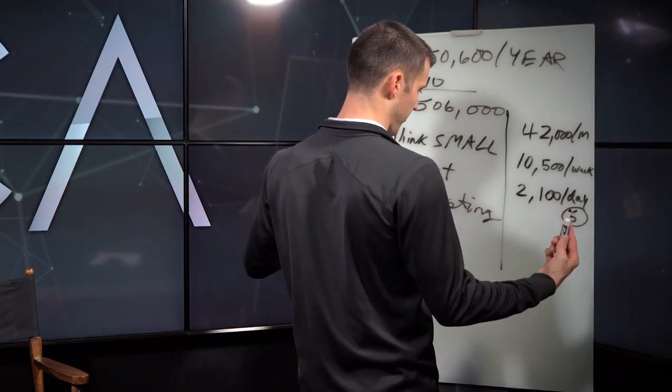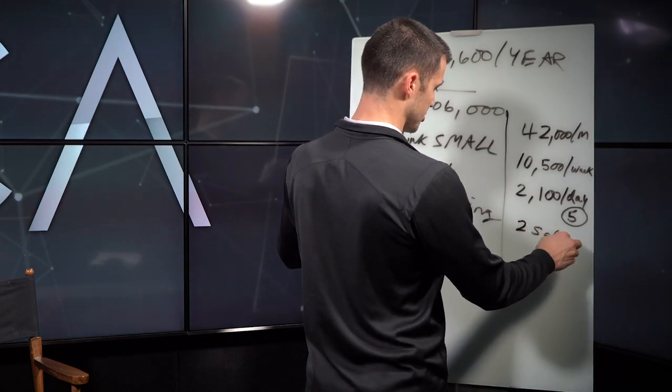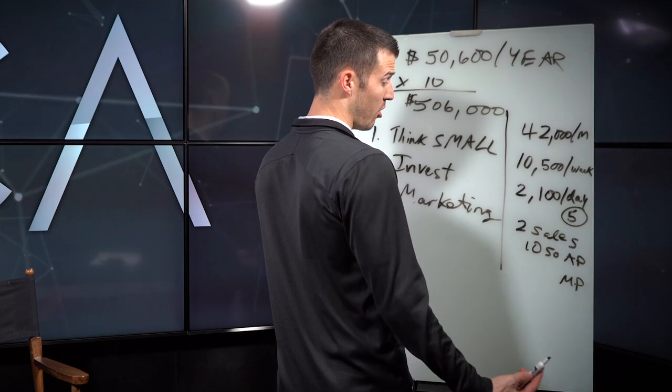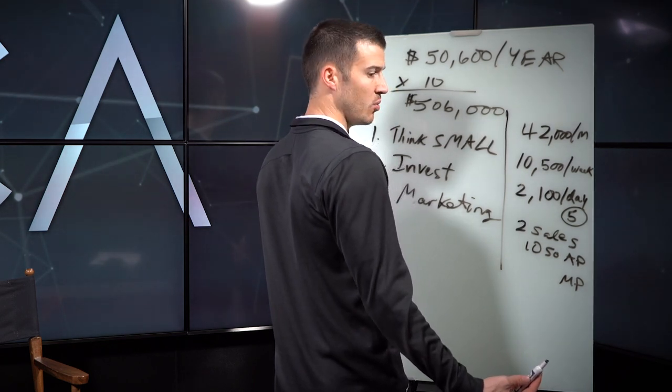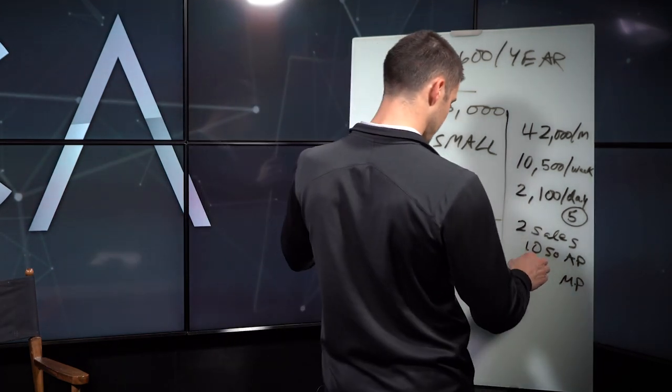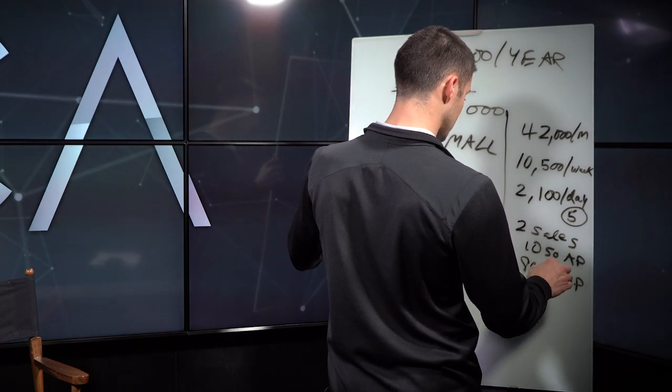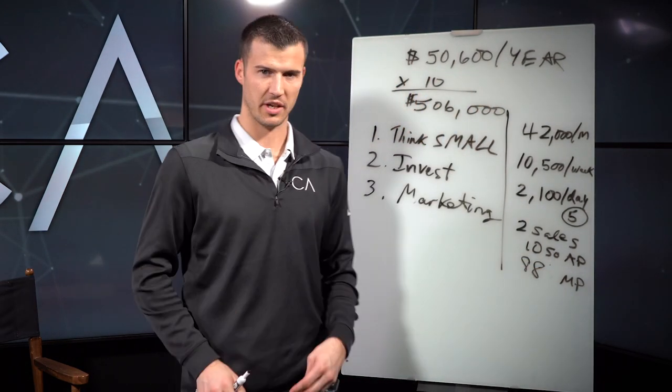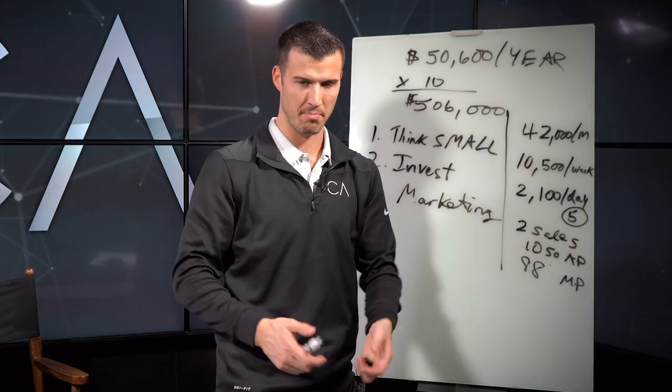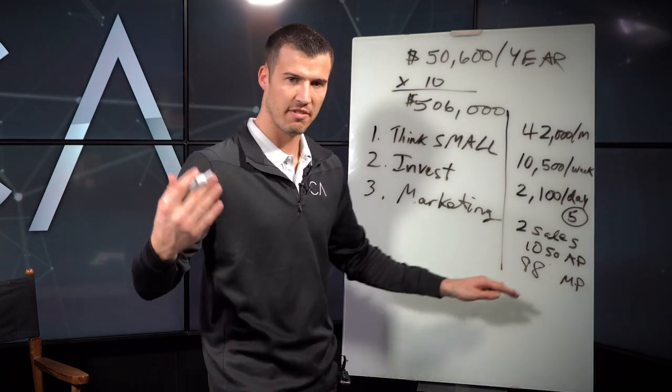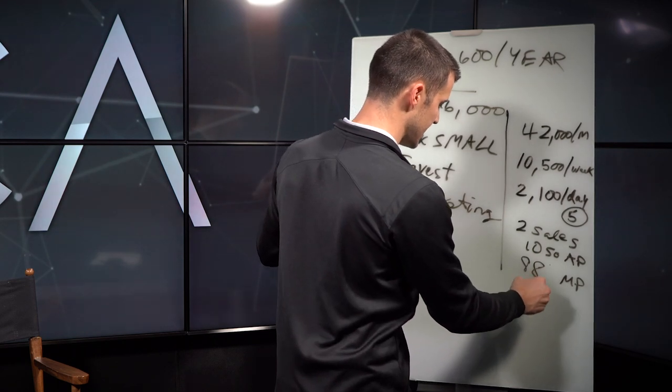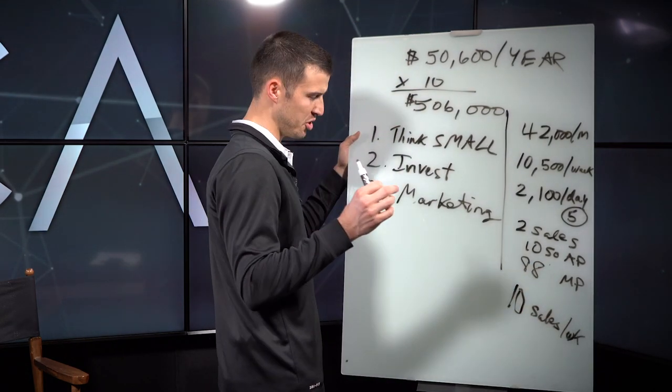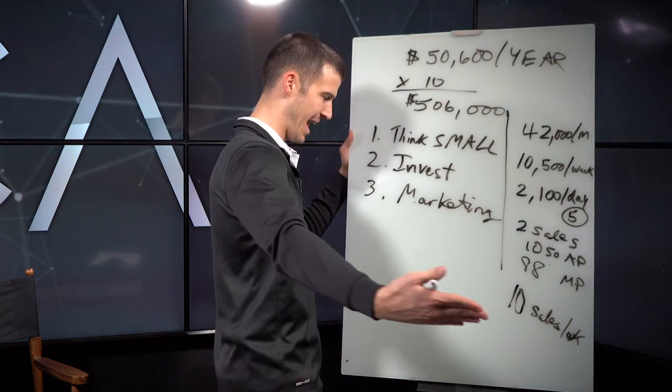If the average insurance agent would just average two sales, that means you would need $1,050 in AP. That means your monthly premium would need to be about $80 in monthly premium. That's not as difficult as you think. So if you do the math, really what you need is 10 sales per week. If you're selling smaller life insurance policies or final expense, then maybe yours is smaller and you got to do different math.